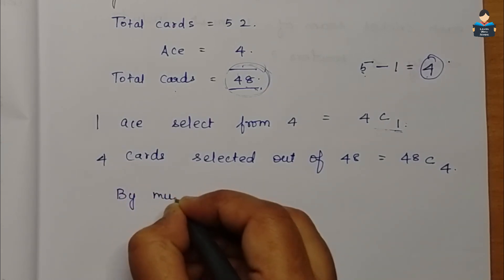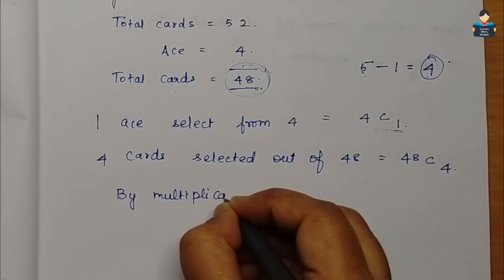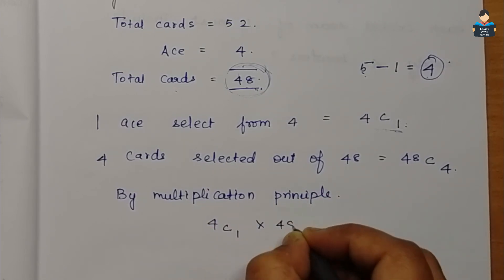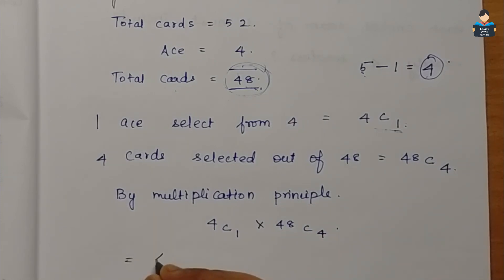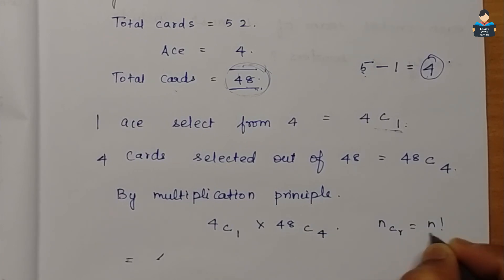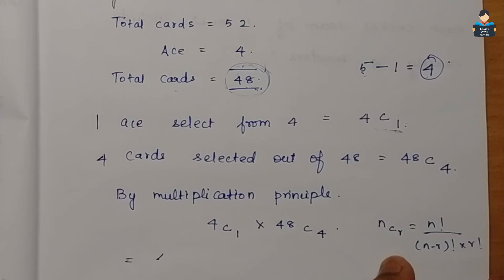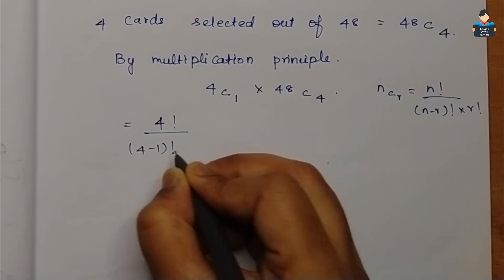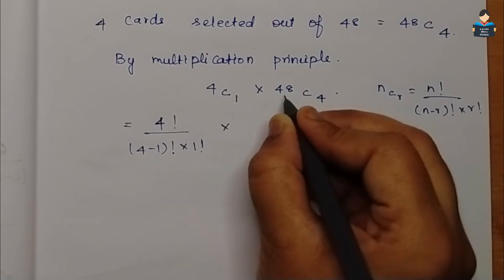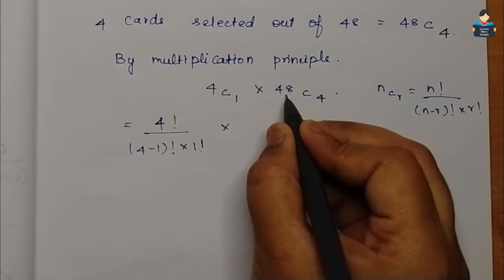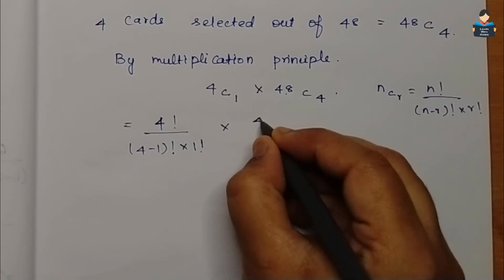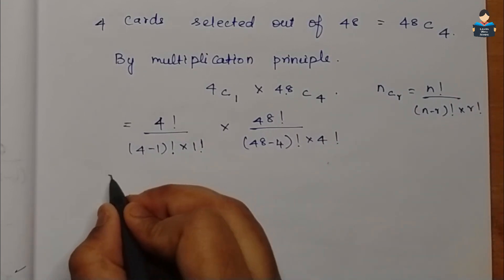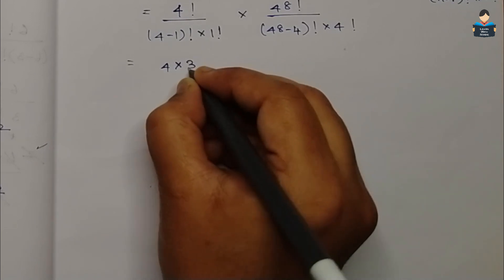So by the multiplication principle, the number of combinations is 4C1 into 48C4. Using the formula nCr = n factorial by (n−r) factorial into r factorial: 4 factorial by (4−1) factorial into 1 factorial, into 48 factorial by (48−4) factorial into 4 factorial.